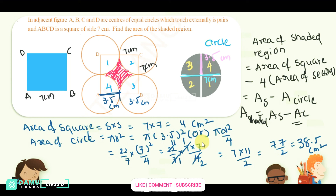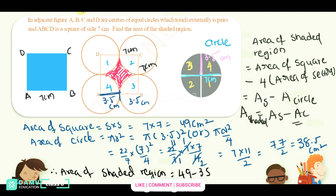Area of square is 49 centimeters squared. Therefore, area of shaded region equals 49 minus 38.5, which equals 10.5 centimeters squared. That is the answer.